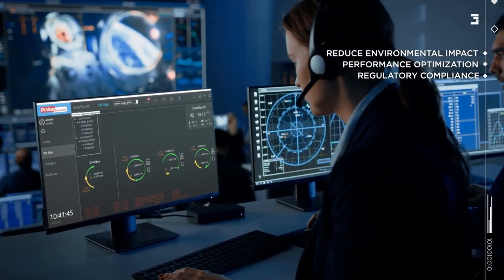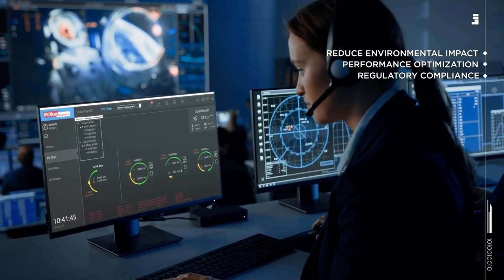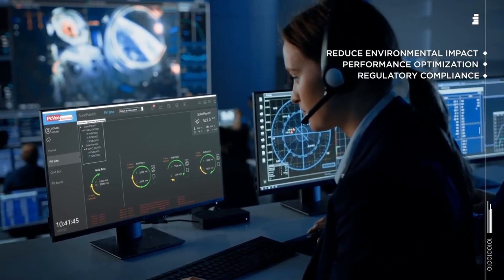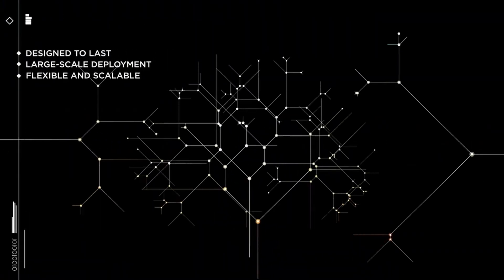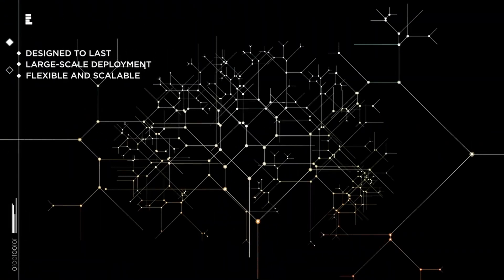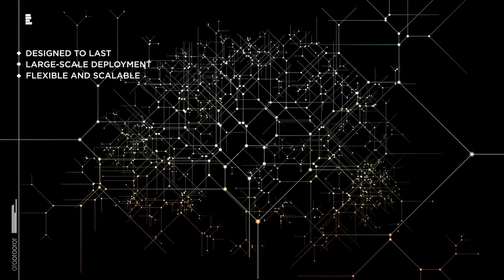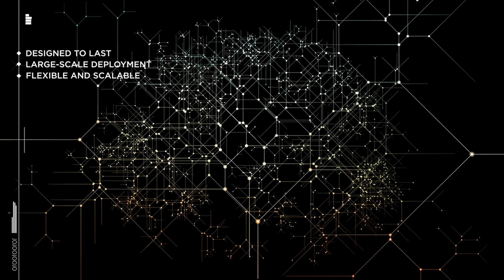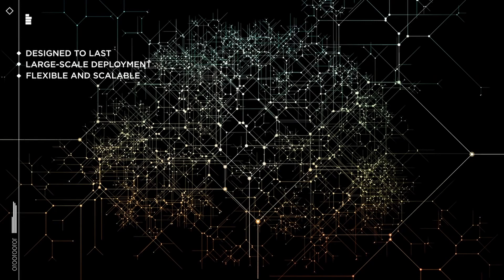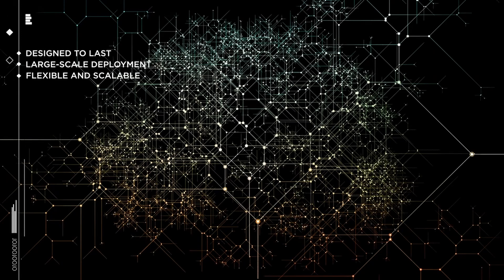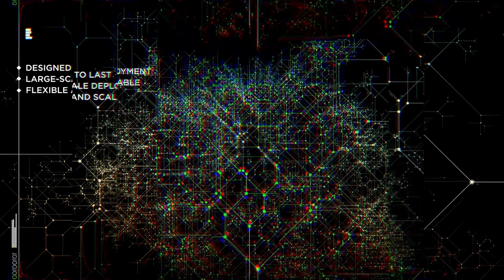It centralizes data for post-mortem analysis, dispatching, and reporting. PC View for power automation systems is a flexible and scalable software platform ensuring high availability yet adapting to system changes over time.